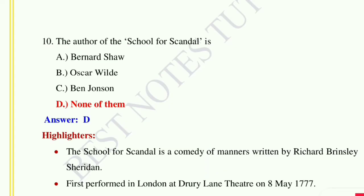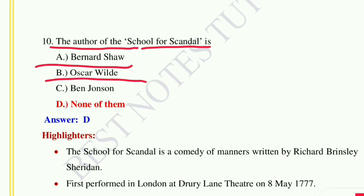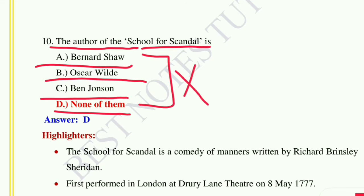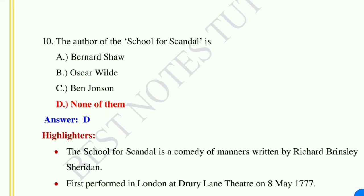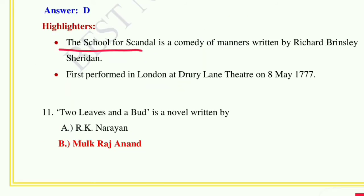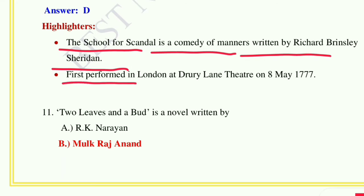Question number ten: The author of 'A School for Scandal' is — option A: Bernard Shaw, option B: Oscar Wilde, option C: Ben Jonson, option D: none of them. Here none of the given answers are correct. 'The School for Scandal' is a comedy of manners written by Richard Brinsley Sheridan, first performed in London at Drury Lane Theatre on 8th May 1777.